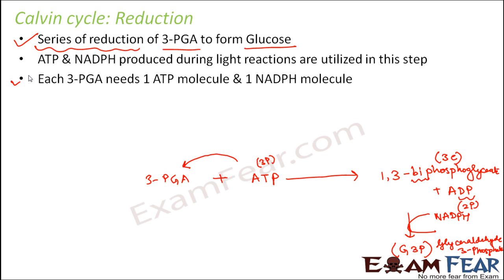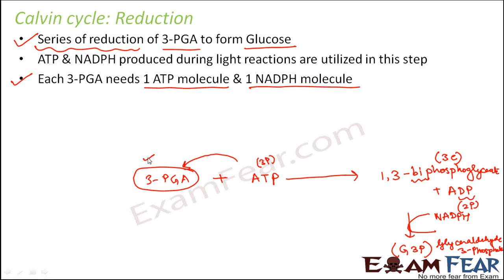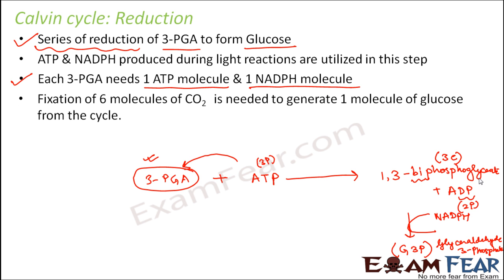Each PGA needs one ATP molecule and one NADPH molecule. Now, what I told you in the first step, two molecules of PGA are formed. So in that case, each of them will need one ATP molecule, and then it will form this intermediate product.